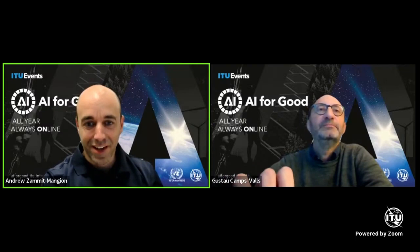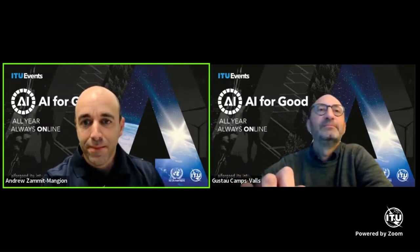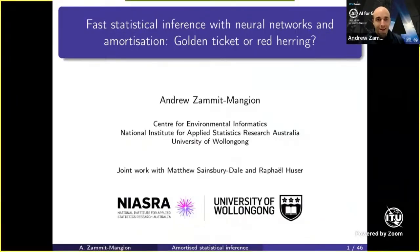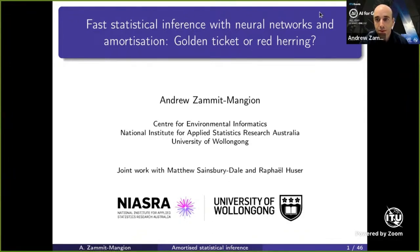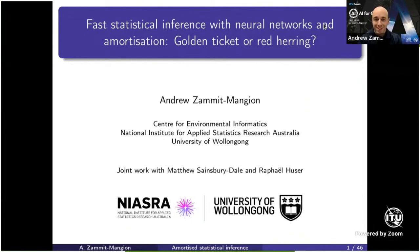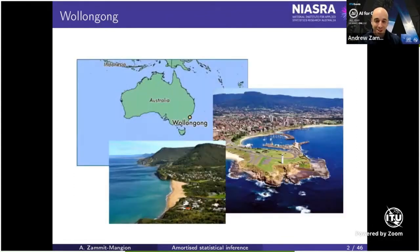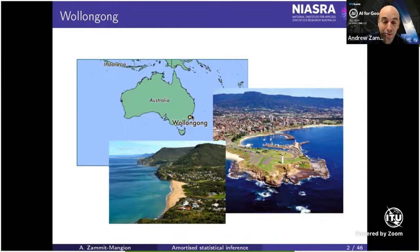Thanks a lot, Gustav, and thank you everybody for coming. So, my name is Andrew Zammit-Mangion. I'm from the University of Wollongong — and I'm sure not many people know where Wollongong is — so I thought I'd show you where it is on the map. It's in Australia; Sydney is just one hour north of Wollongong. It's a seaside city with a medium-sized university, and visitors from Sydney are always welcome.